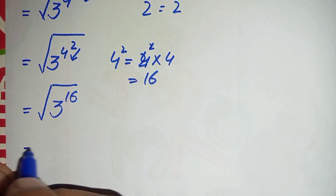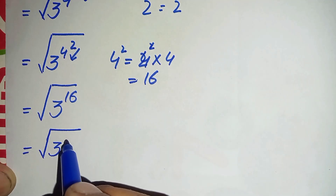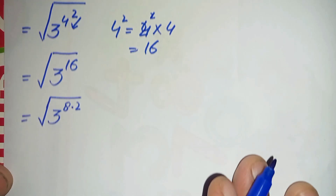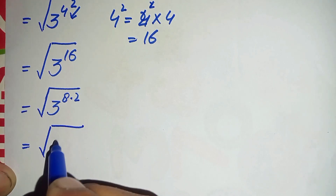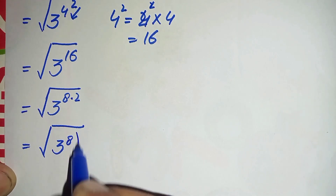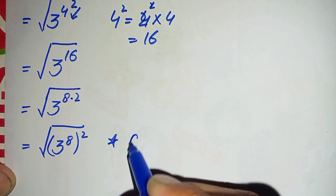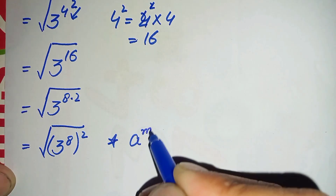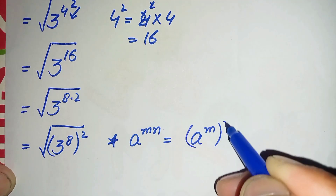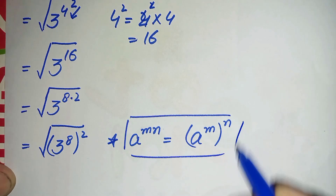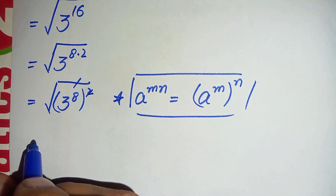We can write the power 16 as 8 times 2, so the square root of 3 raised to power 16 can be written as the square root of 3 raised to power 8 times 2. Using the exponential property that r raised to power m times n equals r raised to power m, all raised to power n, we can then cancel the square and the square root, leaving only 3 raised to power 8.